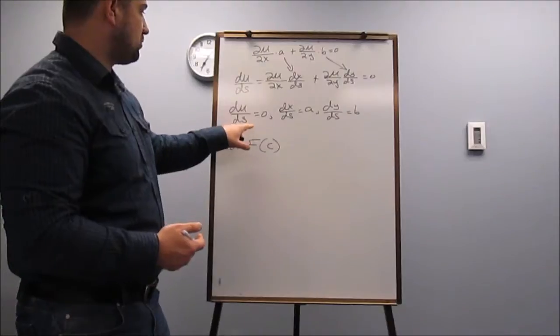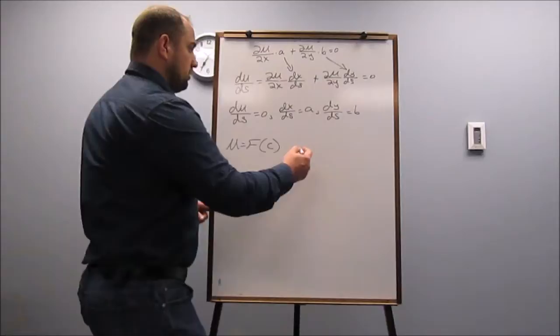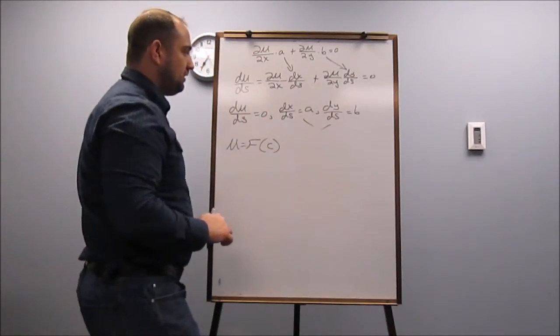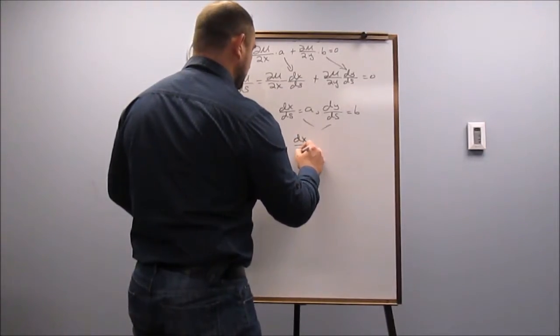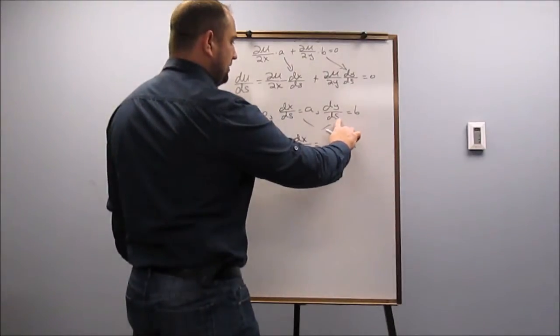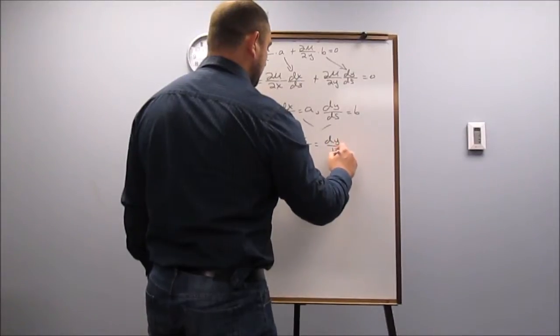So it's constant with respect to this variable here. So what we're going to do is we're going to use these other equations to find out what this constant should be. So using these guys here, I'm going to solve this one for DS. So I get DX over A is equal to DS, and here I get DY over B is equal to DS.